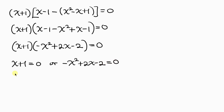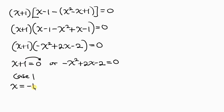Let's address Case 1. We see that x plus 1 equals 0, so we move 1 to the right-hand side. As 1 crosses to the right, it becomes negative 1, giving us x equals negative 1.